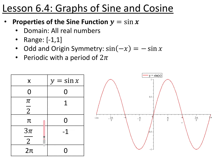At pi over 2, sine is 1. At pi, it's 0. At 3 pi over 2, it's negative 1. And at 2 pi, it's 0. Then it repeats that same exact pattern every 2 pi. Here's an example of two periods of the sine function drawn. This table represents one period; there's also a second period, and it continues on forever in both directions.